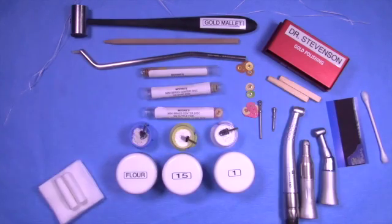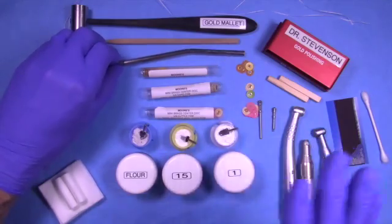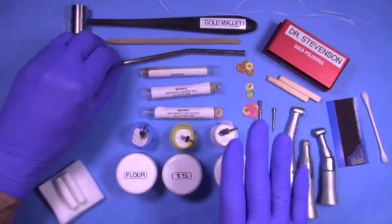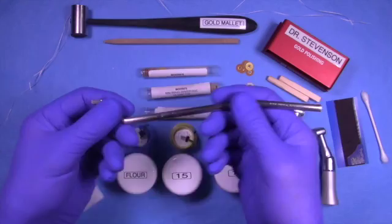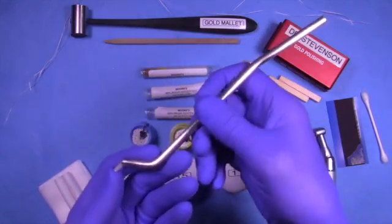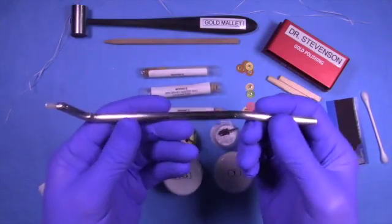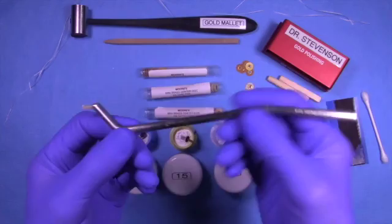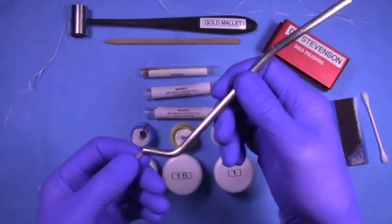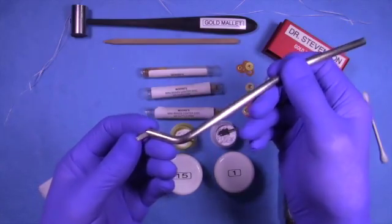The next thing I want to draw your attention to is this metal object here in the back. This is a cementation device that you place on the inlay or onlay, and then you mallet on the opposite side.